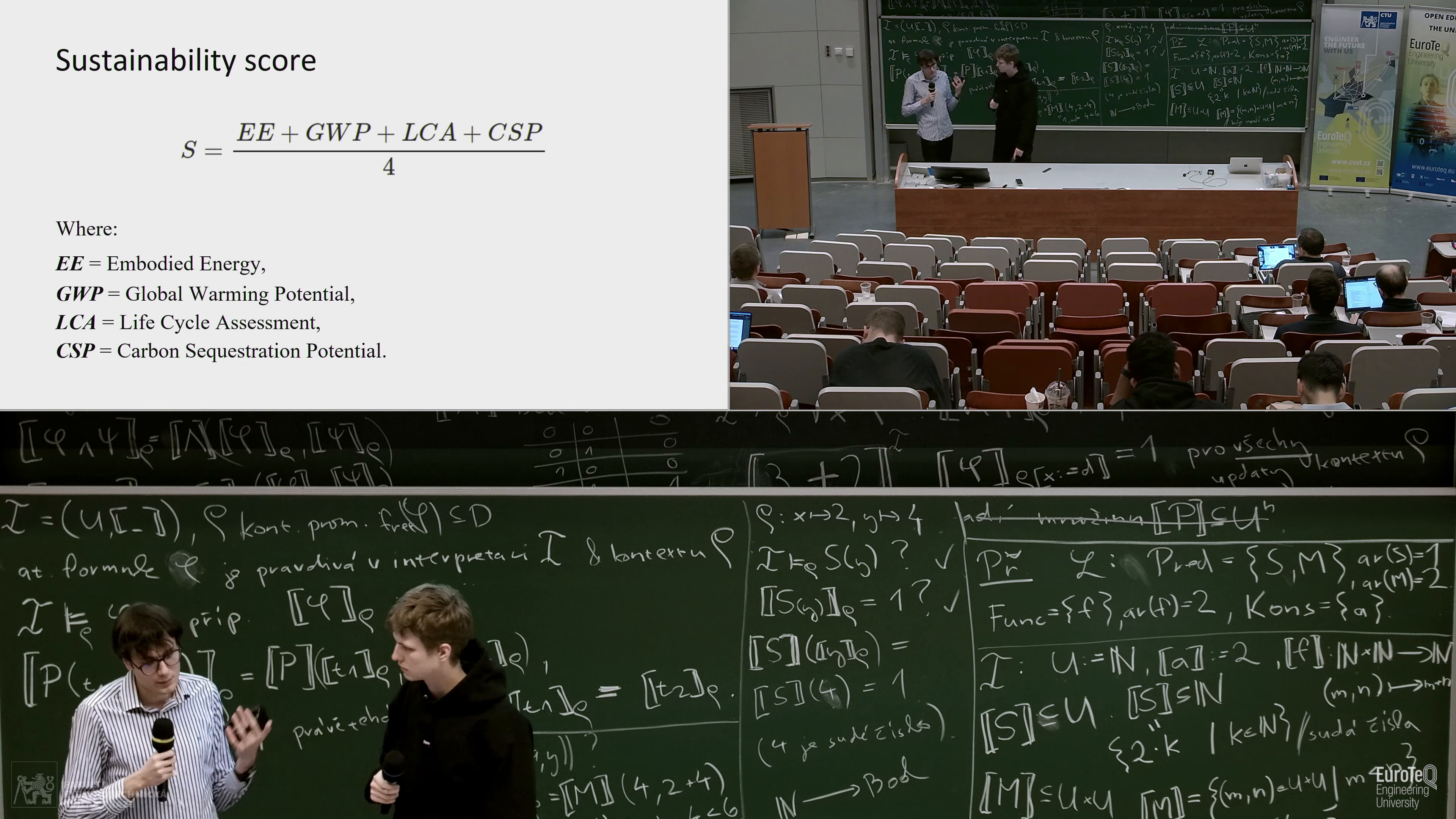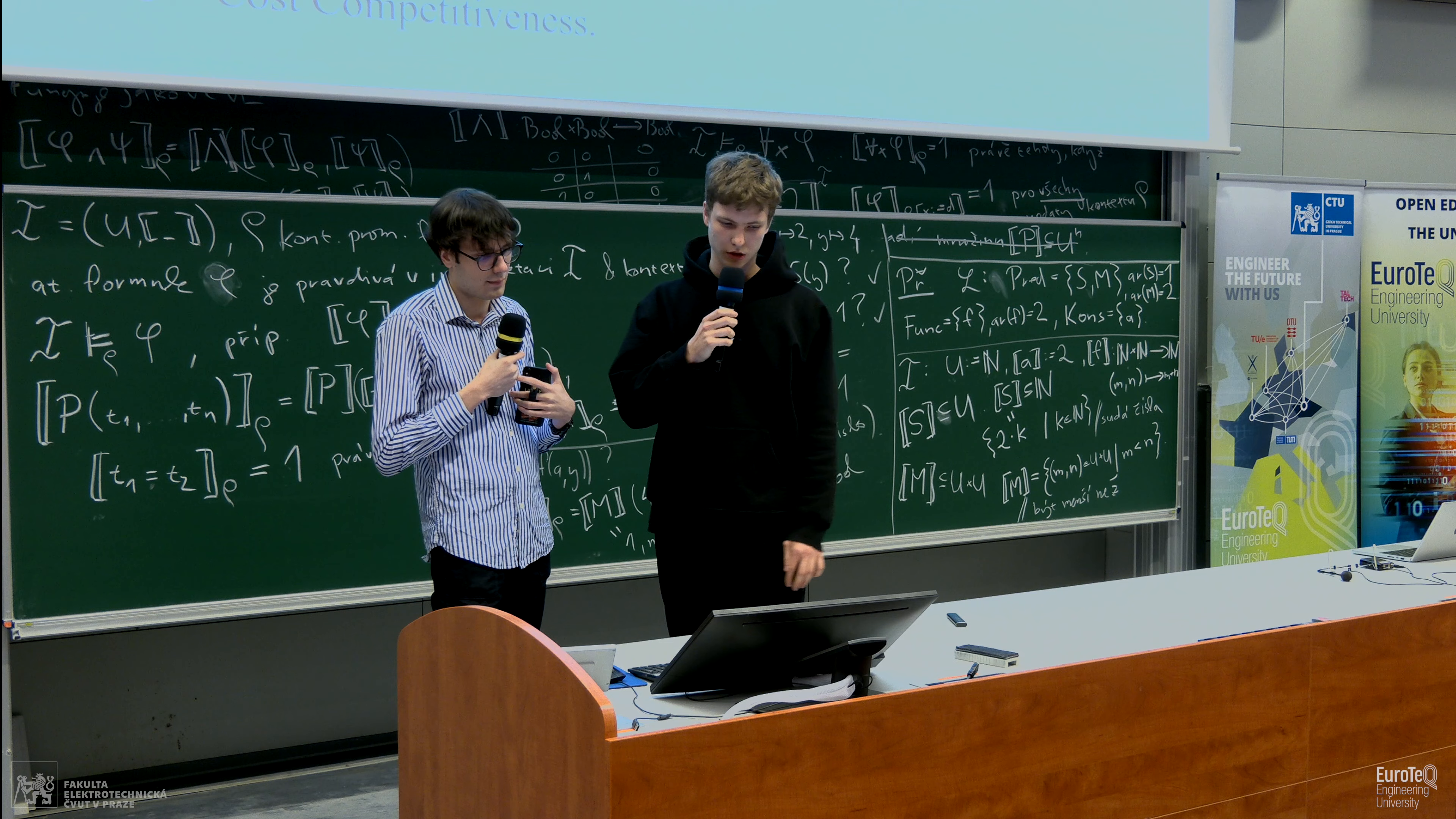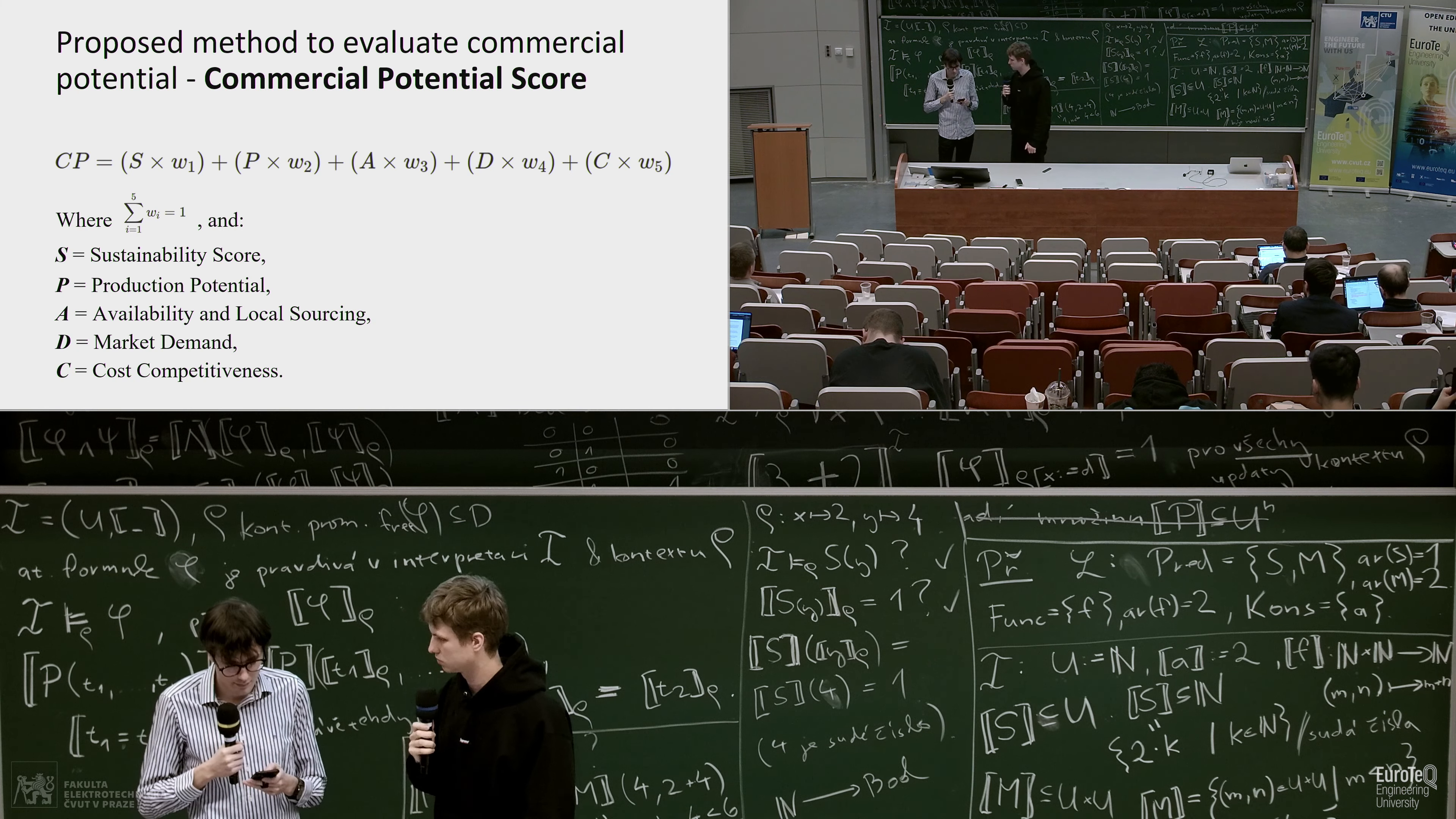This score is just a mean of all of these metrics. The main contribution of our work is the following method or metric which can be used to evaluate commercial potential of renewable resource material. It's basically a weighted sum of five different metrics with their own coefficients. Those metrics are sustainability score, production potential, availability and local sourcing, market demand and cost competitiveness. Those metrics are pretty self-explaining.